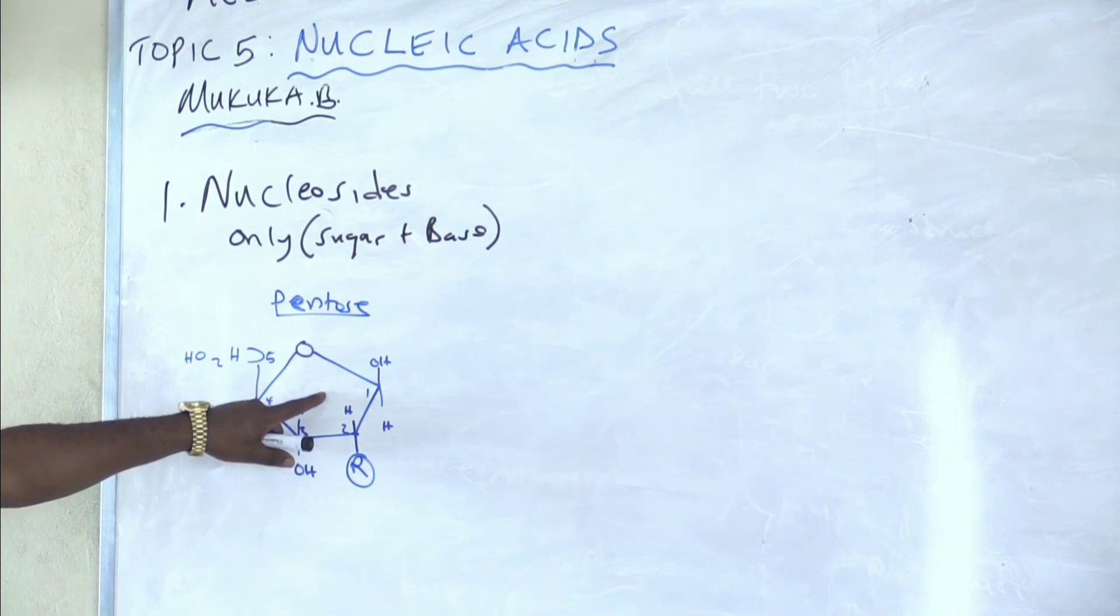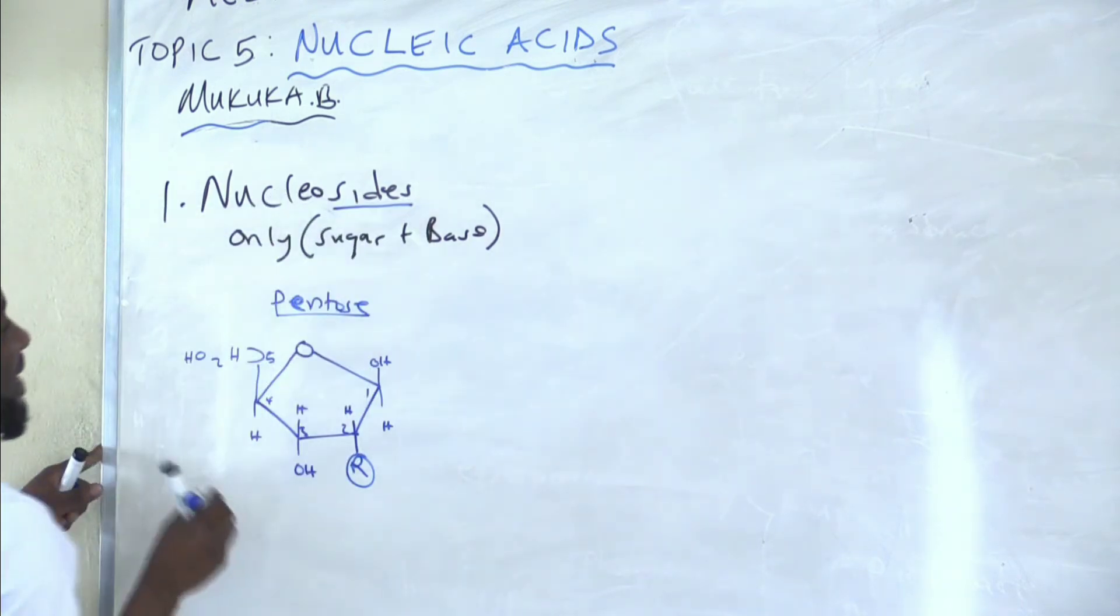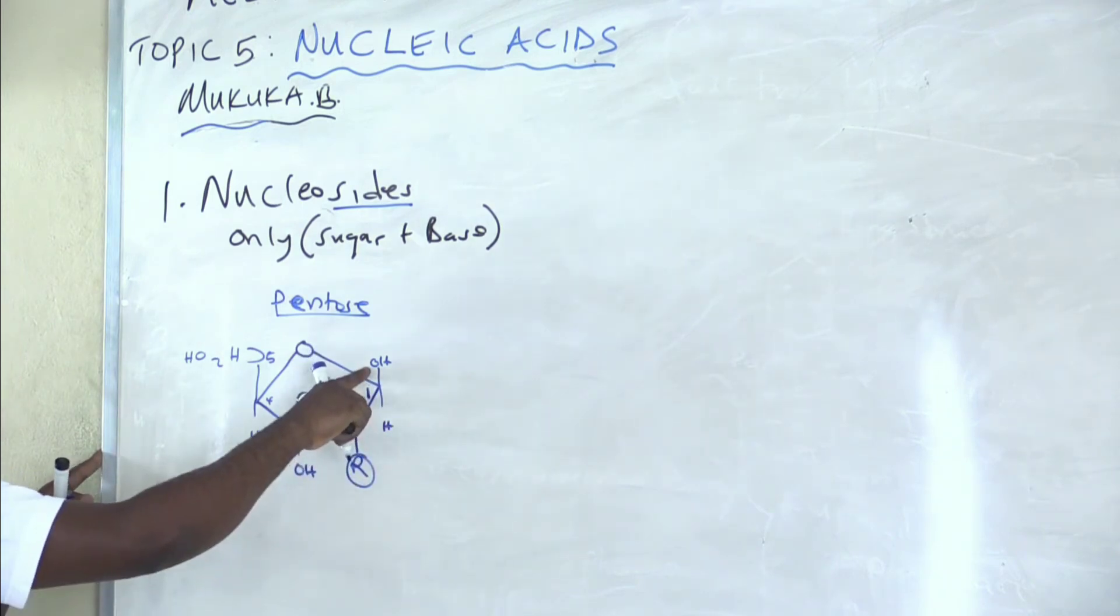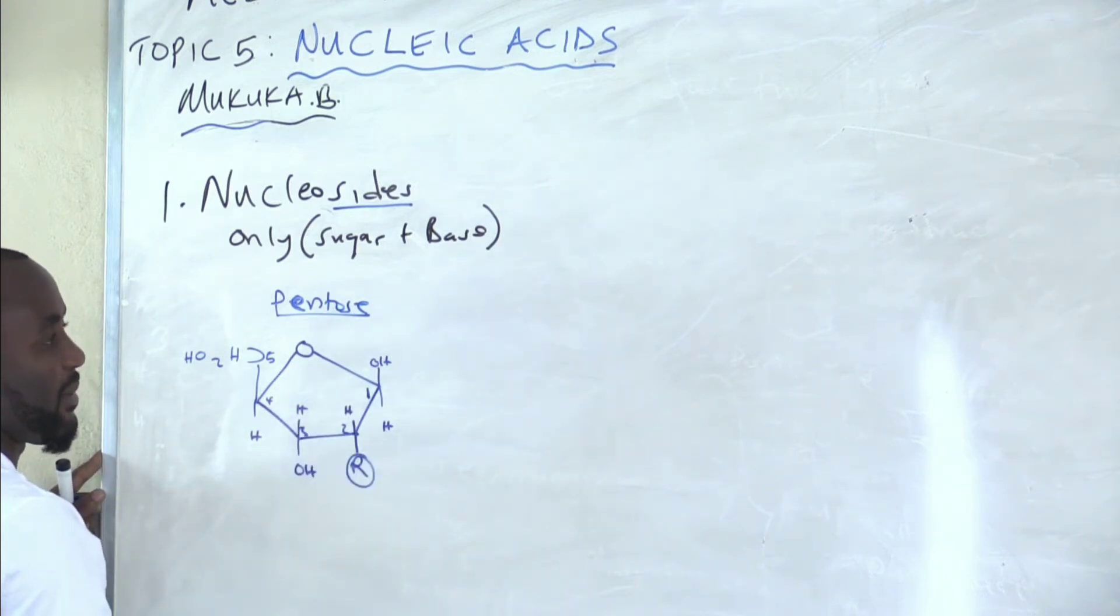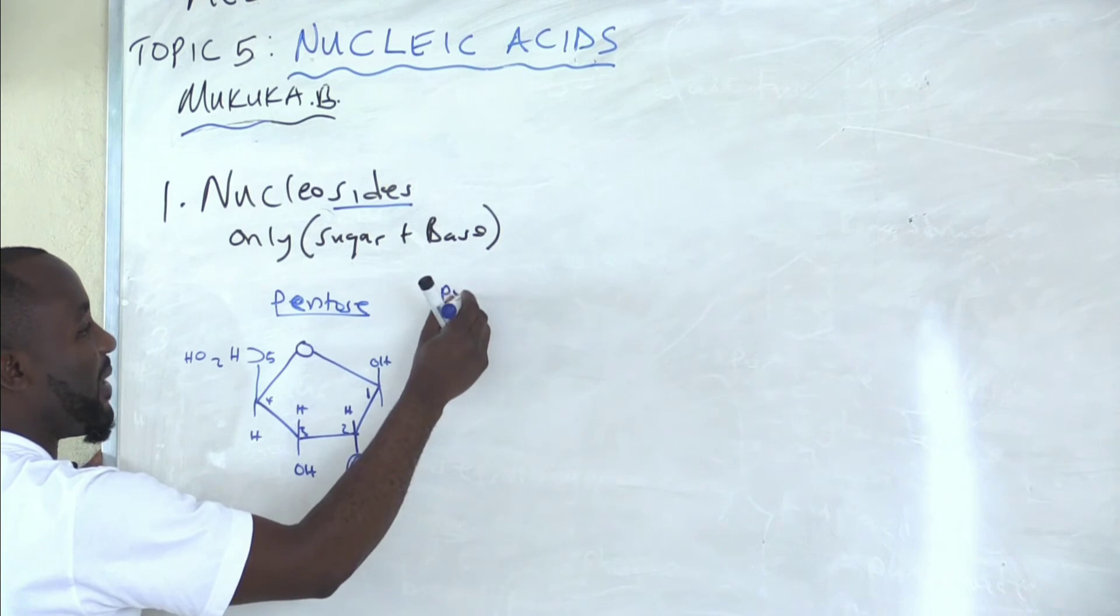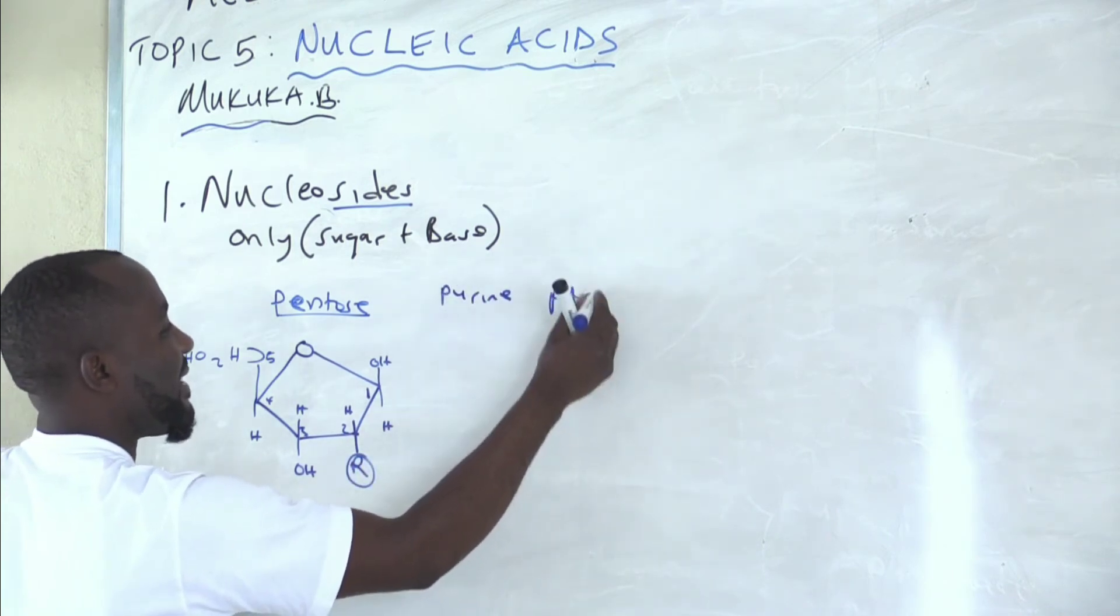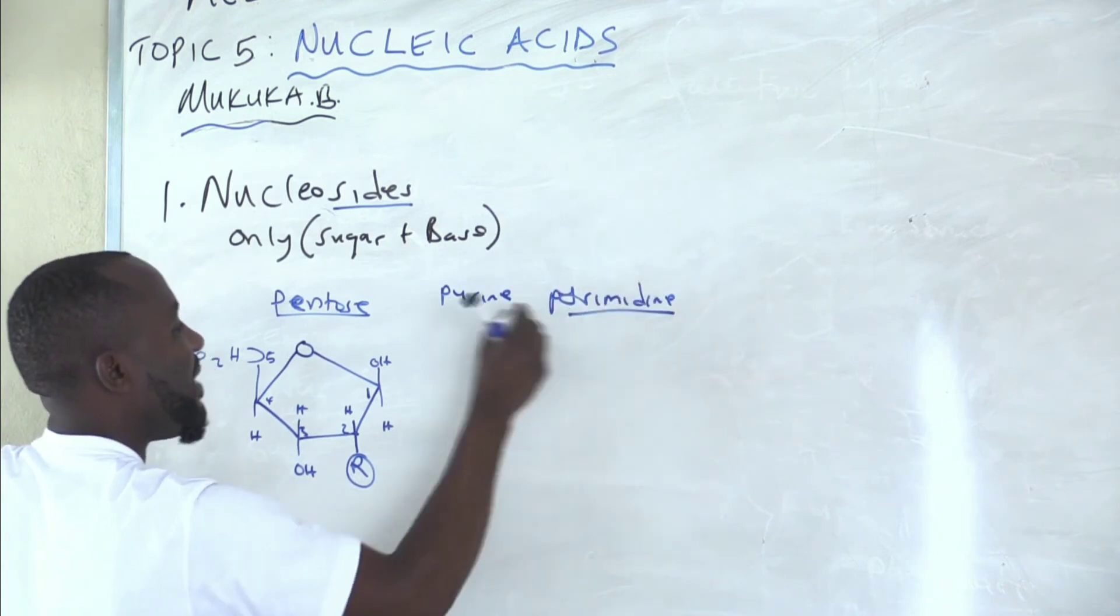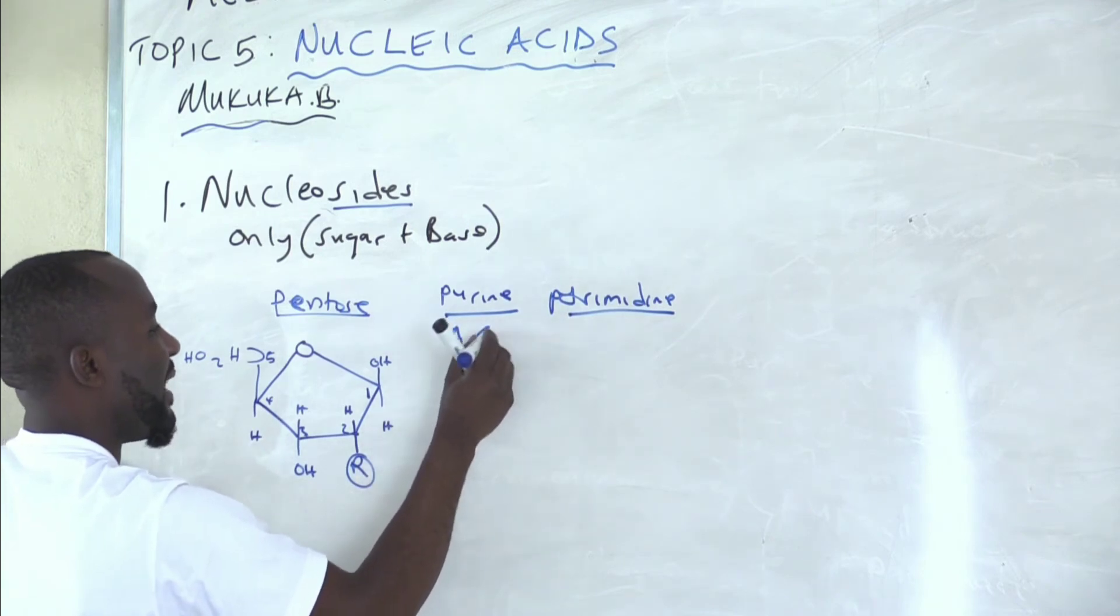When you have this pentose sugar, to make a nucleoside, you need to attach a base. And the base reacts on carbon number one. We are saying this base can be of two types: it can be a purine or you can have pyrimidines. We can even appreciate them. Purines examples: adenine, guanine. Pyrimidines examples: cytosine, thymine, uracil.